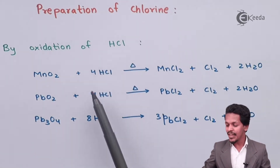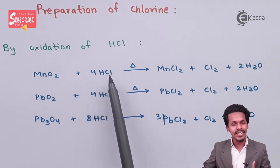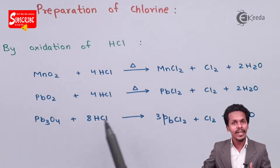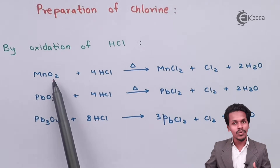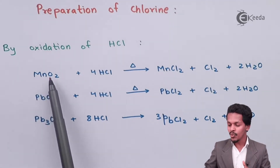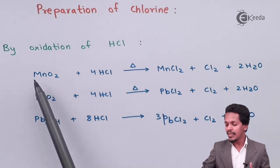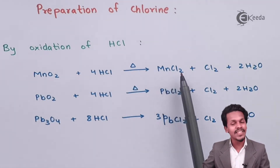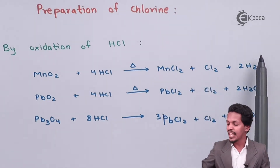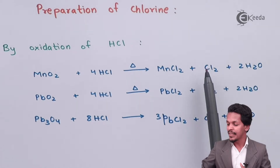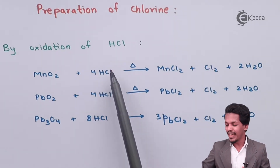Here we are using HCl and oxidizing it so as to convert HCl into Cl2. For that we are using oxidizing agents like MnO2. So MnO2 is reacted with 4 moles of HCl, and by applying a certain amount of heat we convert MnO2 into MnCl2, along with liberation of Cl2 and evolution of 2 moles of H2O as a byproduct. This is how we can obtain Cl2 by oxidation of HCl.